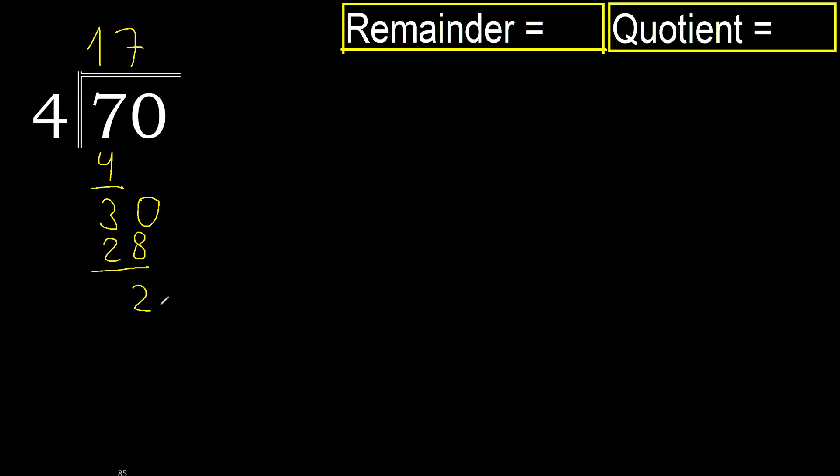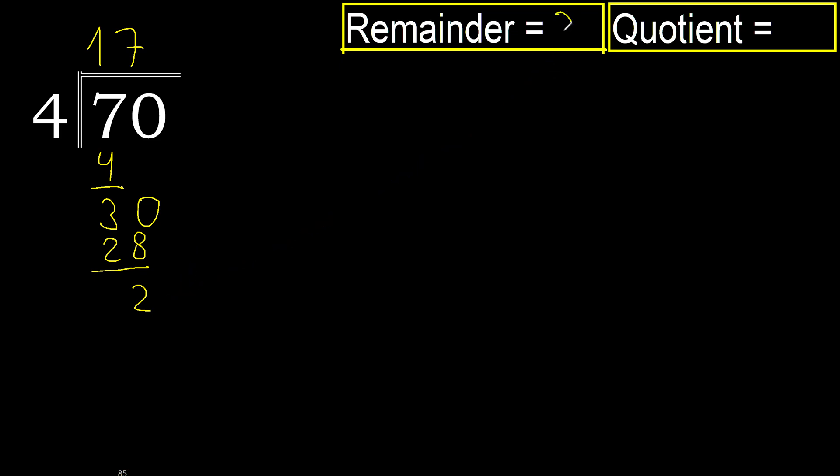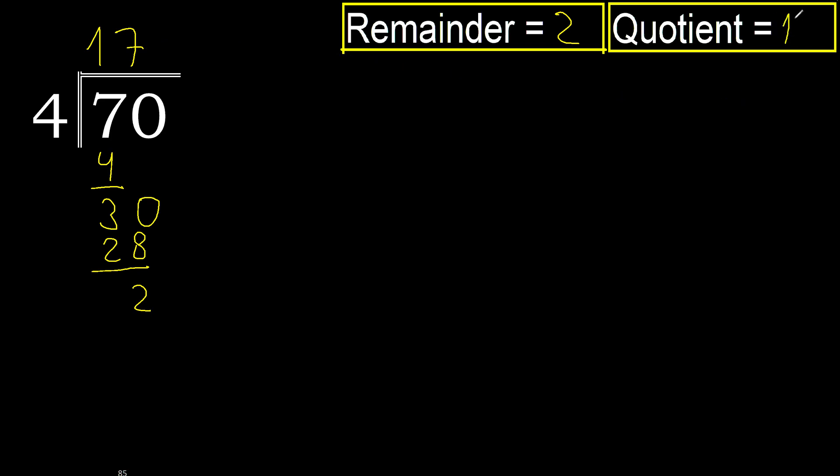There are no more digits, therefore finish. Result: remainder 2, quotient 17.